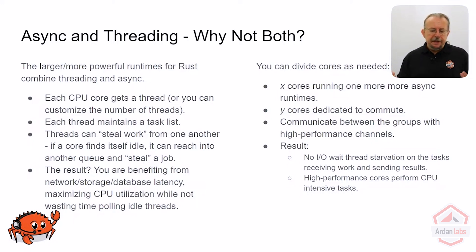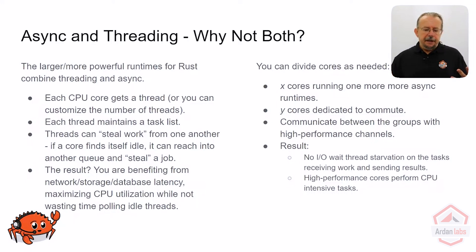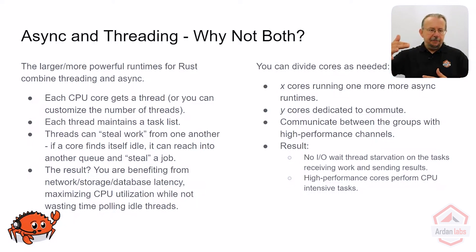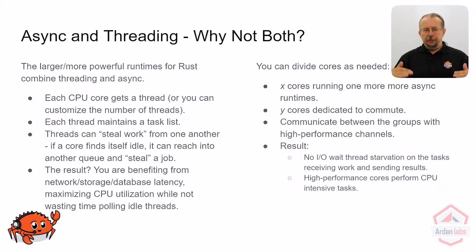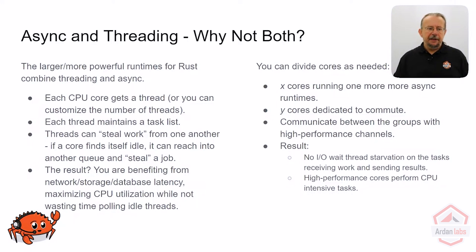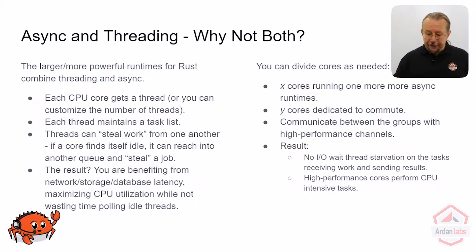You've effectively got the same thing as running a number of Node.js instances as you have CPUs, because you have an async queue on each one. But from the point of view of actually writing your async code, it's completely transparent — you don't need to know about that. It scales it up and runs really fast.